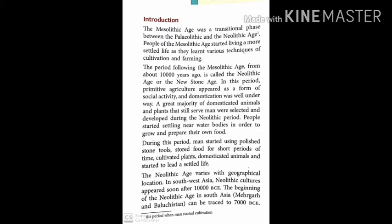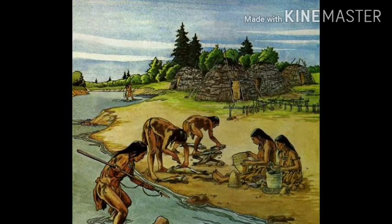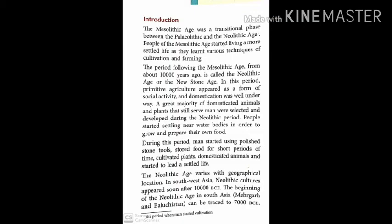People of the Mesolithic Age started living a more settled life as they learned various techniques of cultivation and farming. The people moving from the Purva Pashan Kaal towards the Madhya Pashan Kaal started learning new things; their minds began to develop, and they started learning farming and agriculture. This period is from about 10,000 years ago, and what followed the Mesolithic Age is called the Neolithic Age or the New Stone Age.